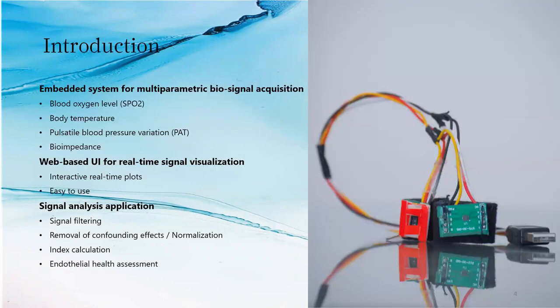To avoid this, what we did was put all of these methods together to create a single system that can measure all the different parameters, so that we can use one another to verify the result. The system measures the blood oxygen level, the body temperature, the variation of your blood pressure, and something called bioimpedance. Bioimpedance is a measure of how well the body conducts electricity. A recent study at UOM identified that bioimpedance can measure endothelial function.